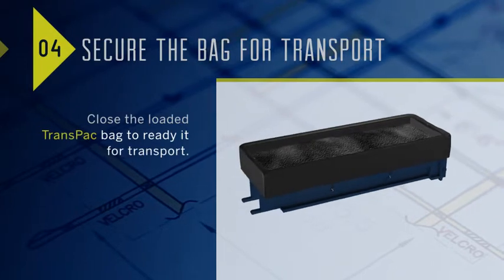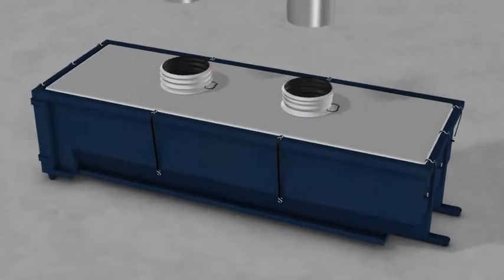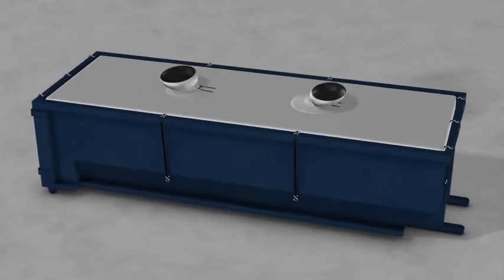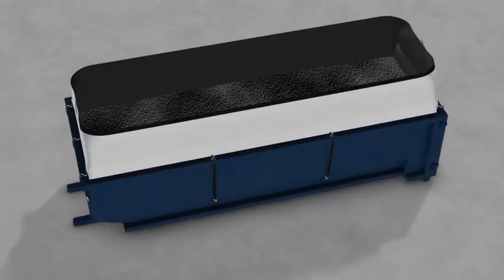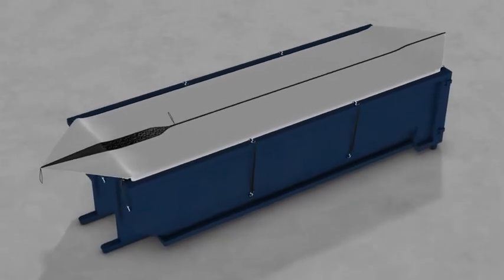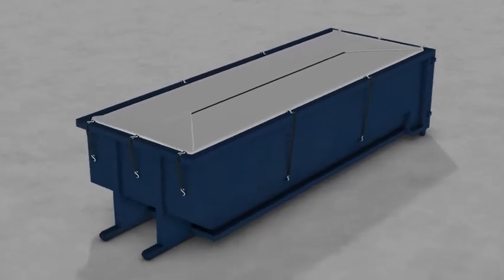After loading, close the TransPak by either disconnecting the spouts and tying closed, or by zipping the top of the bag closed, working from one end to the other, so that both zippers meet.